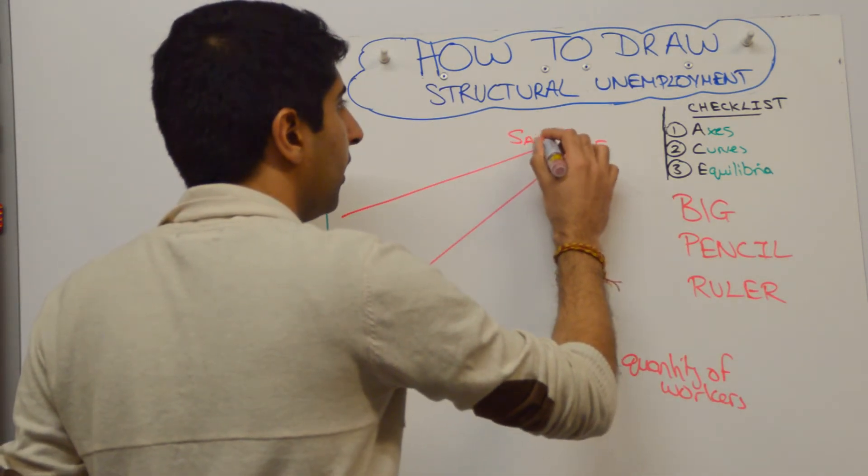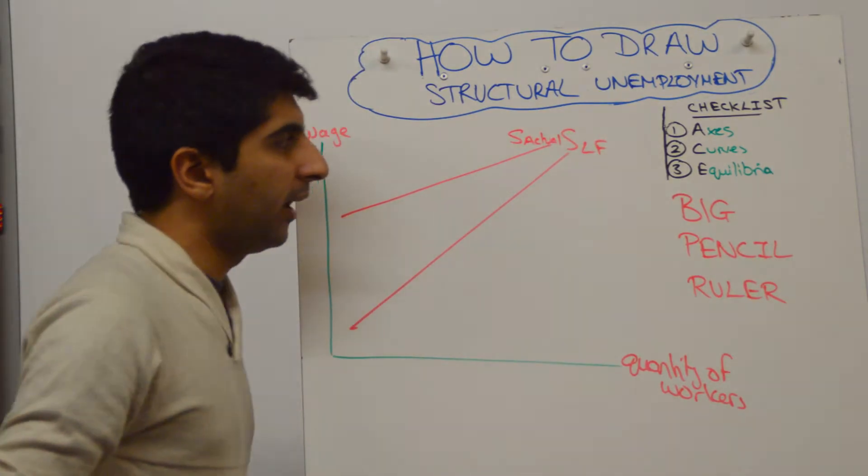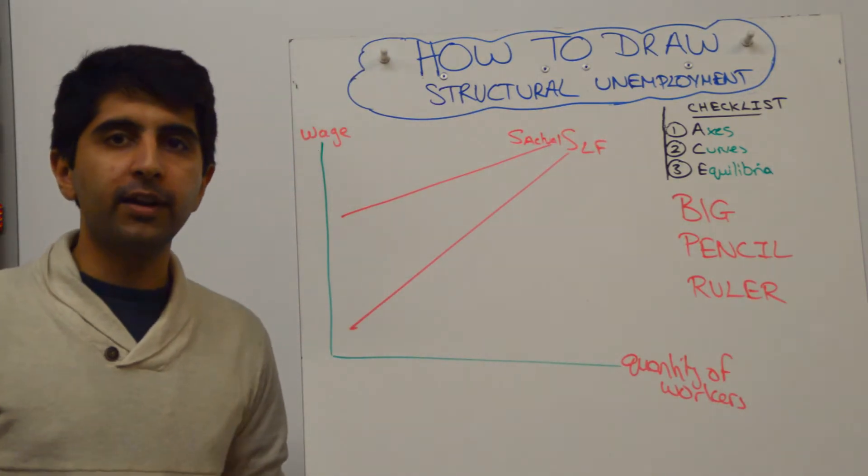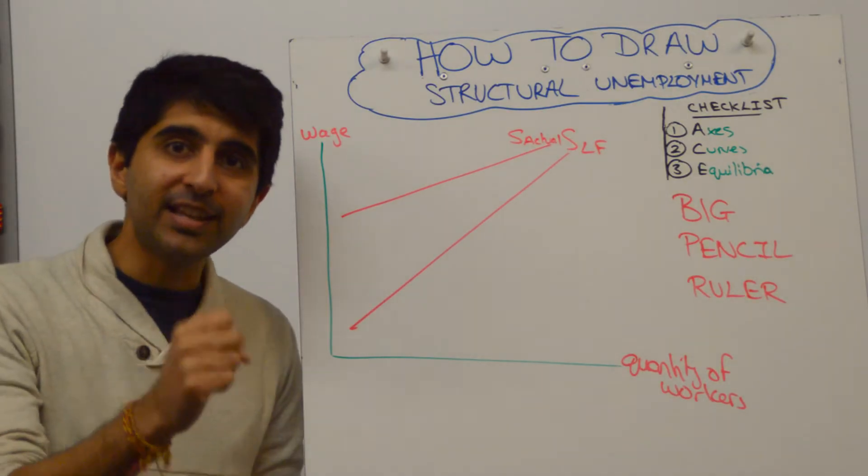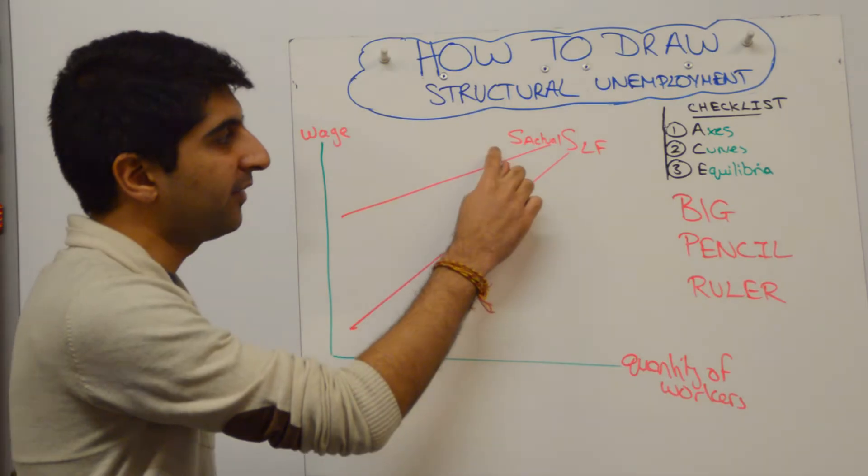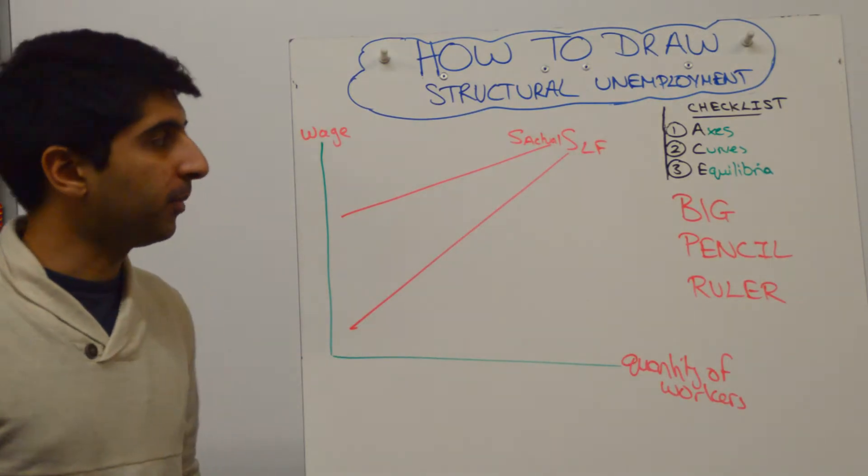But we also have an actual labour supply curve, so we'll call that supply actual. That tells us the quantity of workers that are willing and able to take jobs at different wage rates but that actually take the job. So that's the difference between the left-hand supply curve and the labour force supply curve.